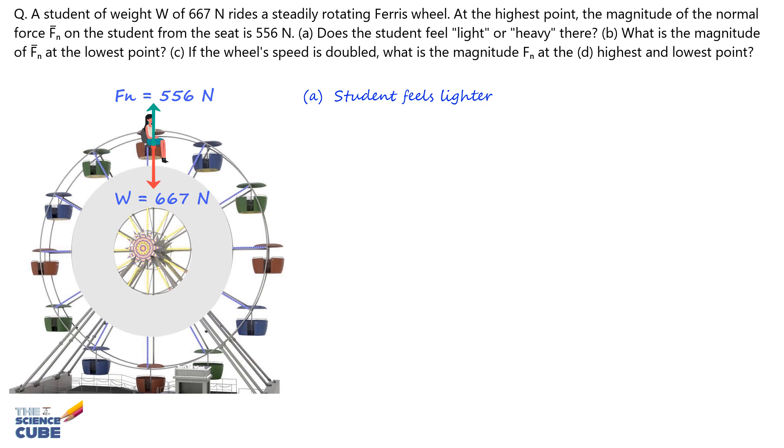Then we can write Newton's second law of motion equation F equals Ma as Fn minus W equals minus Fc. That is, Ma here is the centripetal force. So what's happening is that the net force on the left-hand side is causing an acceleration that is nothing but the centripetal acceleration.